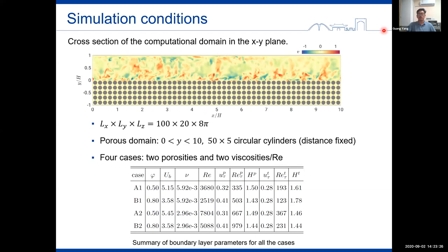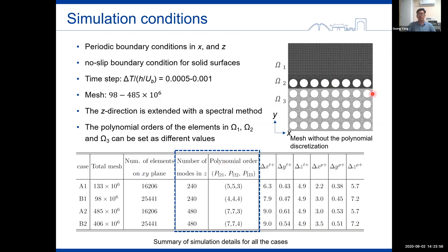And this slide shows the cross-section of the flow domain as well as a snapshot of the wall normal velocity. As we can see, the porous domain consists of circular cylinders which are arranged in line. And four cases of simulations are conducted, covering two porosities and different Reynolds numbers. Periodic boundary conditions are defined in x and z directions. And the polynomial orders of the elements in different regions are set as different values to get a finer mesh near the solid surface.